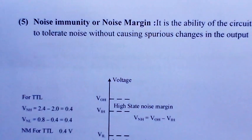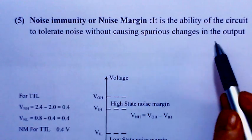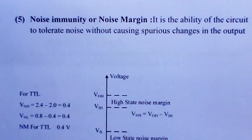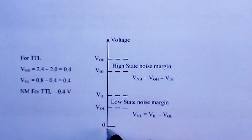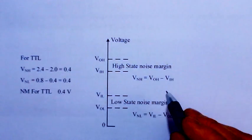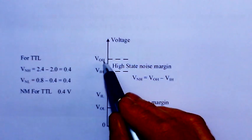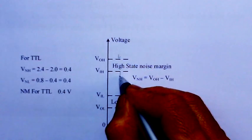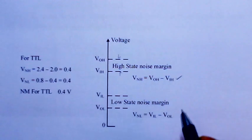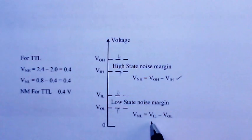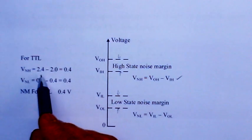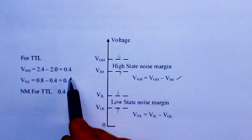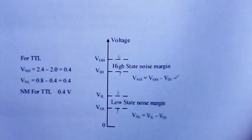Noise immunity tells how much noise the circuit can tolerate without spurious changes in output. The voltage levels between 0 and supply voltage include VIH, VIL, VOH, and VOL. The high-state noise margin is VOH minus VIH, and the low-state noise margin VNL is VIL minus VOL. For the TTL circuit, both high and low noise margins are 0.4V. If one is higher than the other, the minimum is taken as the noise margin for the circuit.